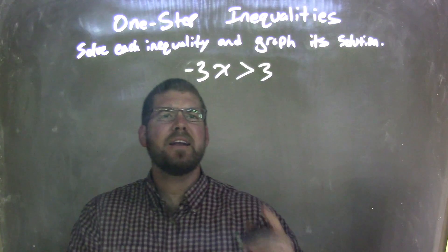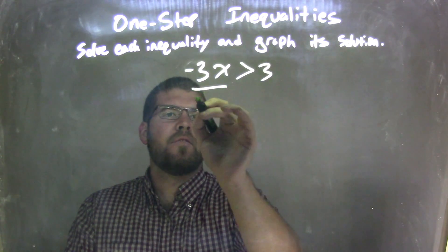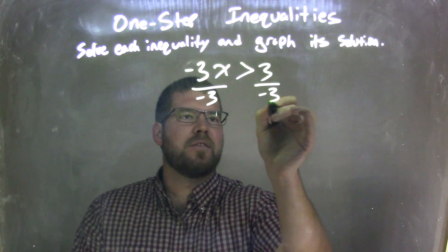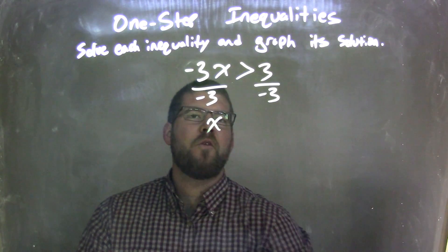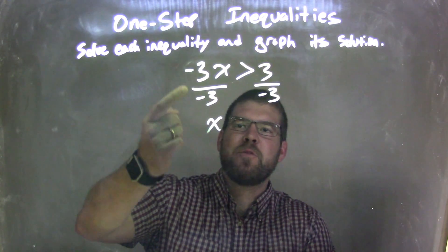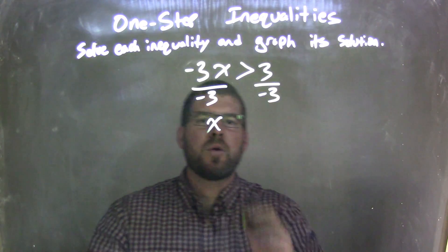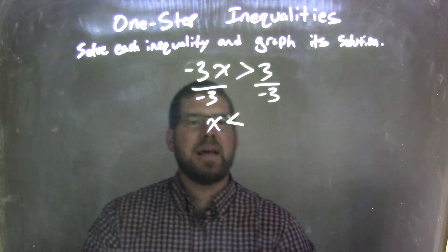Well, the first thing I need to do is get x by itself. So I'm going to divide by negative 3 to both sides. My x is by itself on the left, but when I divide by a negative over the inequality, I need to flip the inequality.